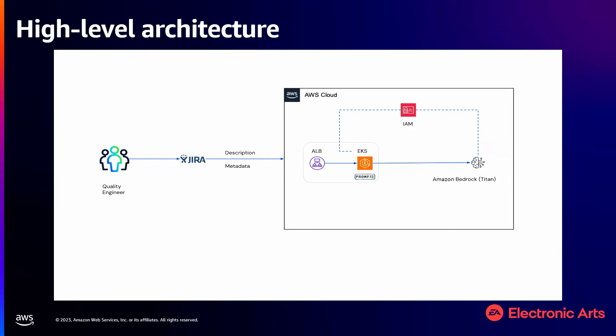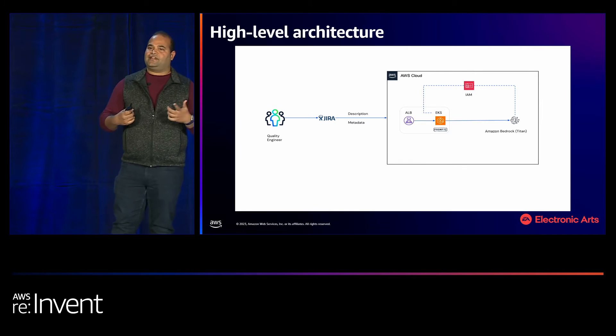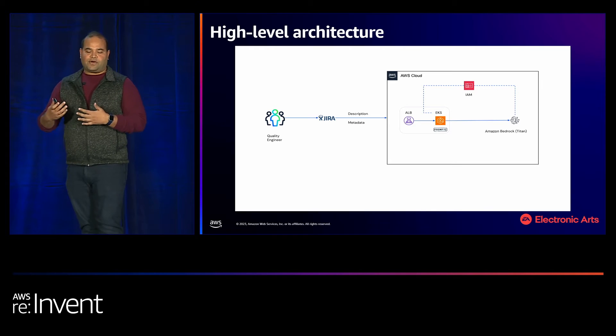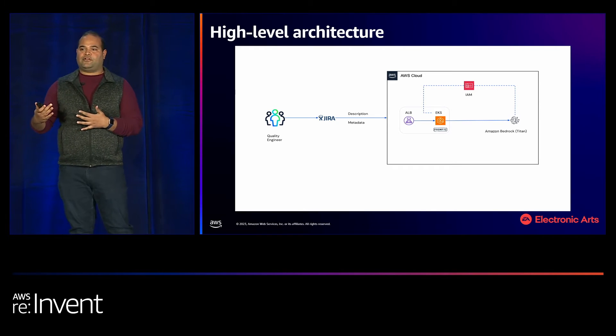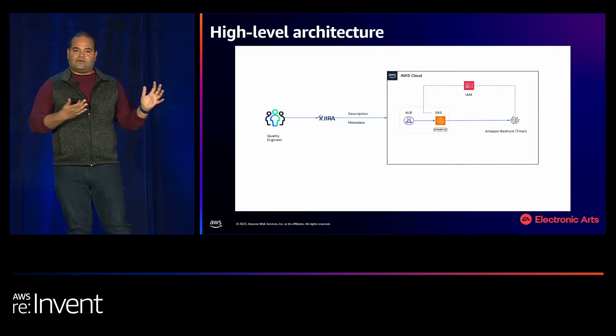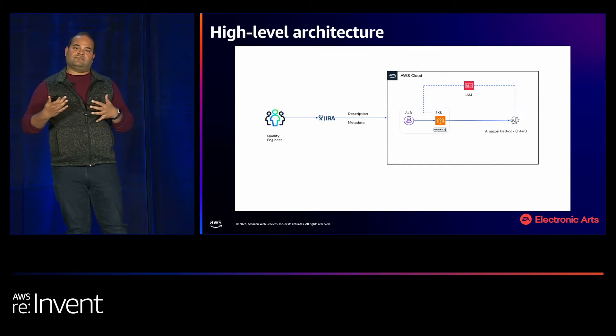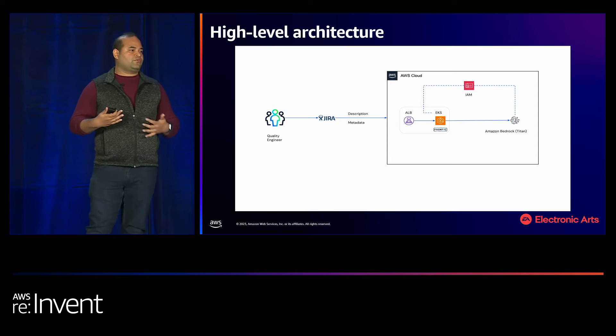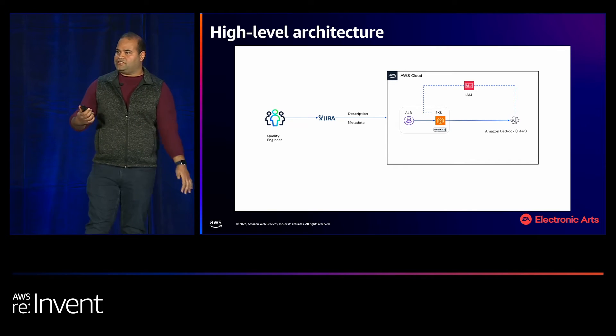Here is again the high-level architecture, and you'll see a pattern across all four opportunities — it's intentionally simple. On the left side, you see quality engineers interacting with a custom-built button within JIRA. When triggered, it takes in the requirement and any other metadata from the JIRA ticket and passes it to a back-end service, which is again powered by Amazon Bedrock and Titan. The generated test scenarios are then displayed to the quality engineers for review and for making any changes or additions.